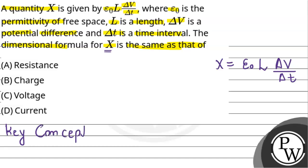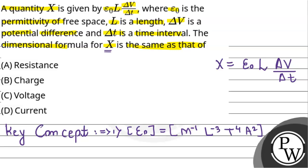Let's talk about the key concept we are going to use here. We need to find out the dimensional formula of X, so we must know the dimensional notation or dimensional formula of all the quantities involved. First, the dimensional formula of epsilon-naught — permittivity of free space — is M⁻¹ L⁻³ T⁴ A², where M is mass, L is length, T is time, and A is ampere, the unit of current. These are the fundamental units of dimension.